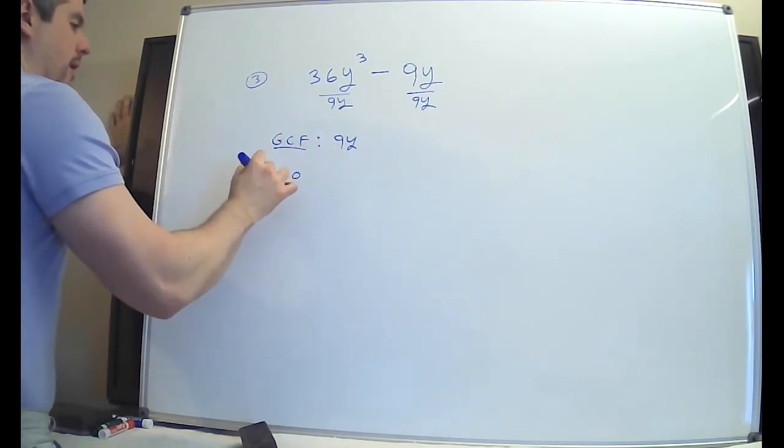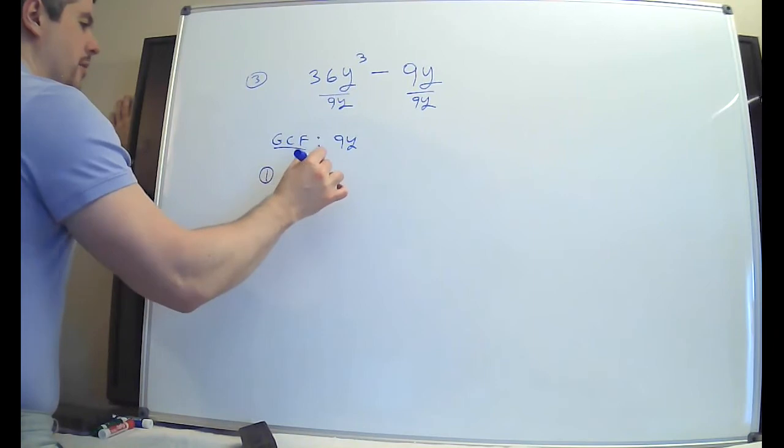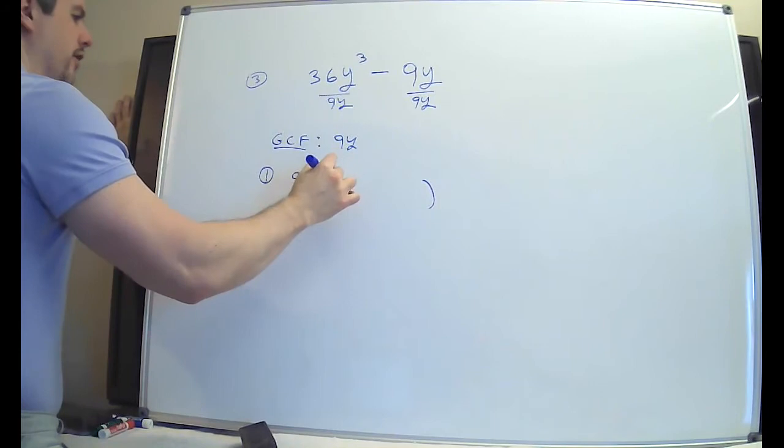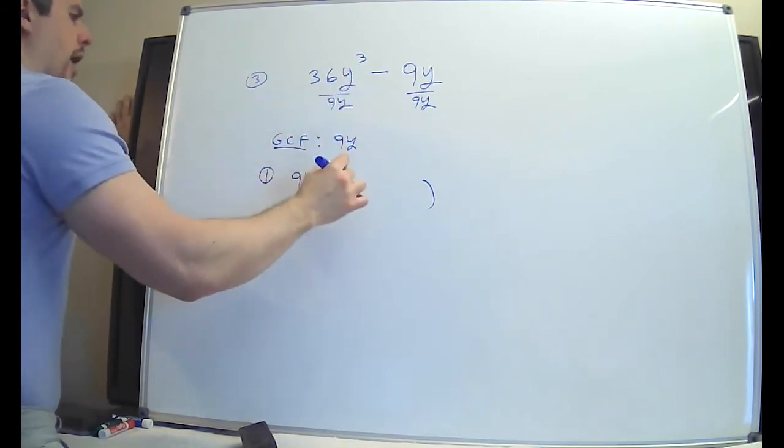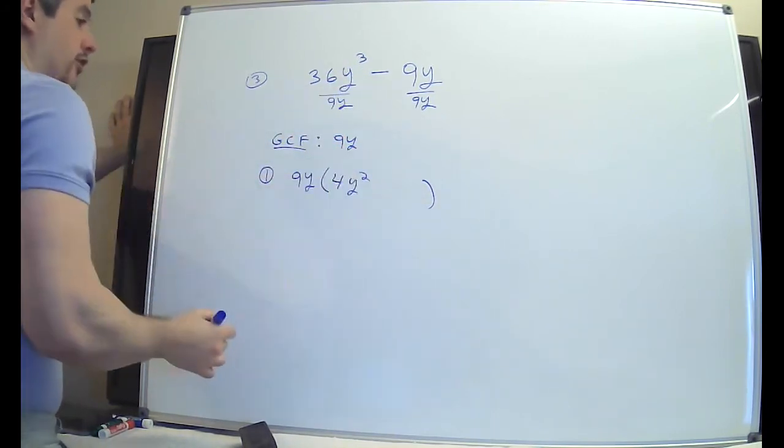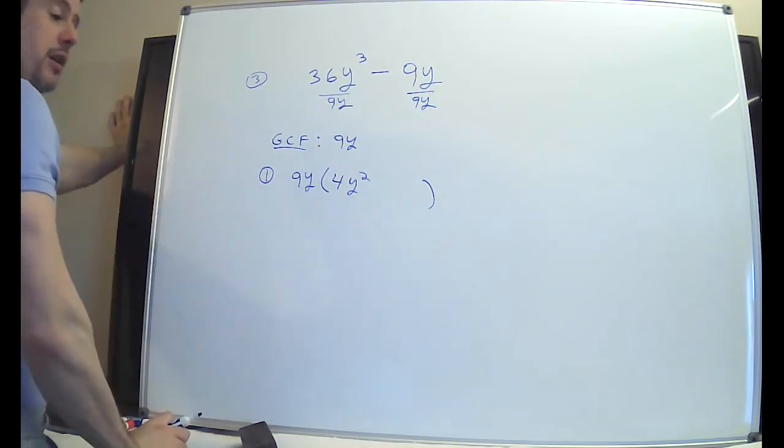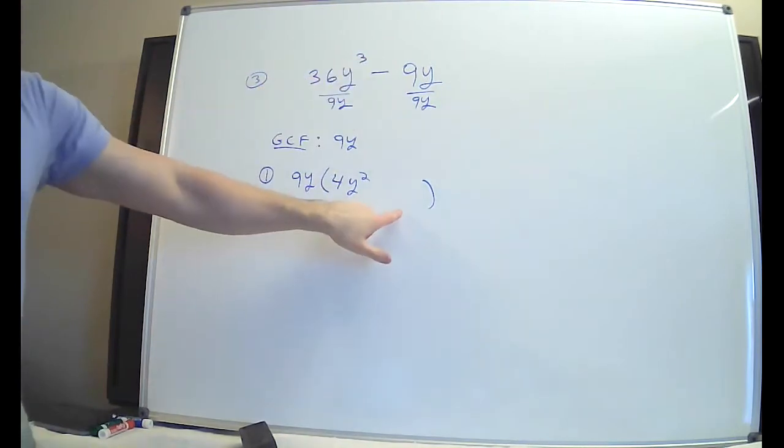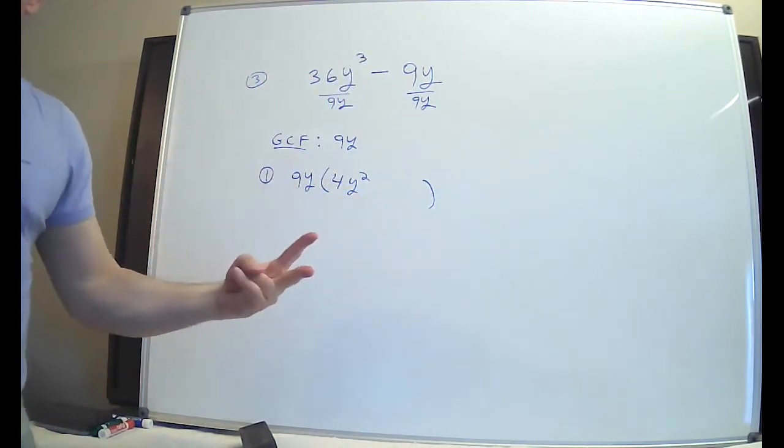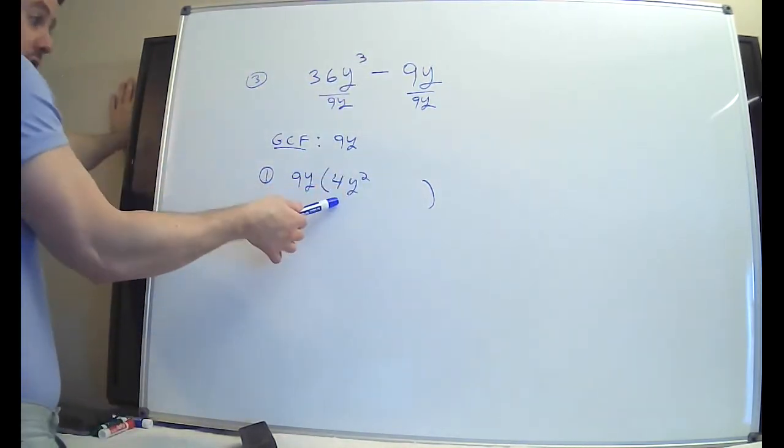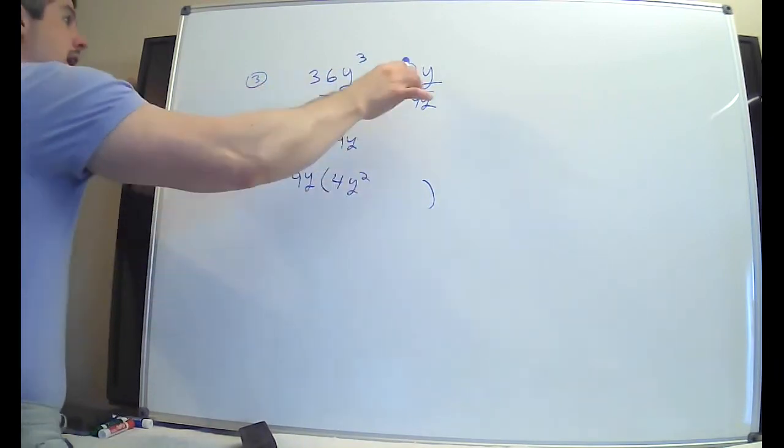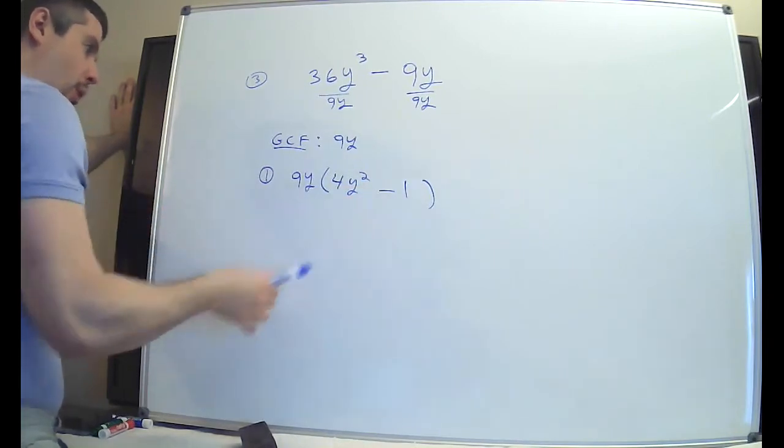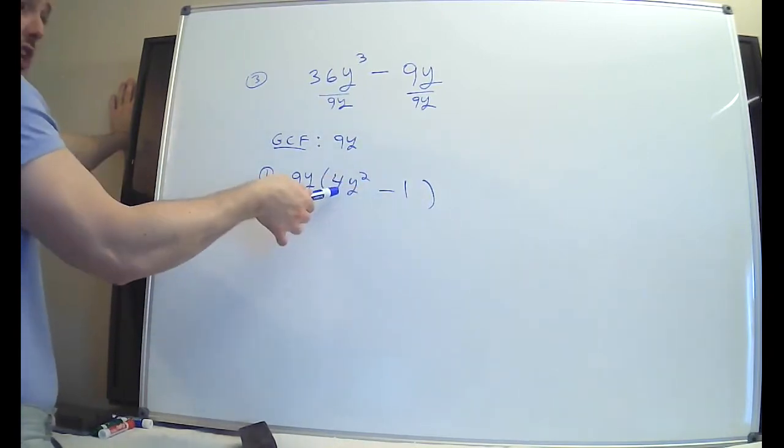So the GCF is 9y. I'm going to put that step one, take the GCF, put it in the front, put your big ass parentheses. Now, do the division. 36 divided by 9 is 4. y3 over y1 is y2. Now, here's the problem. Some people just wrote this down. You started off with a binomial. You have two terms. What's in these parentheses better be two things. You can't just have one thing in there when you started with two. 9 divided by 9 is 1. This has to be there. This is really important. You can't keep factoring if it was just this. I mean, what the hell do you do?